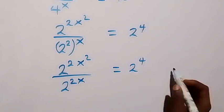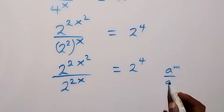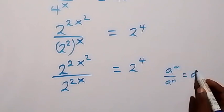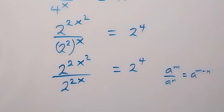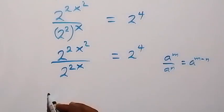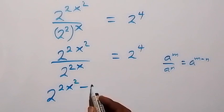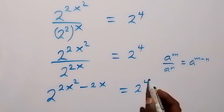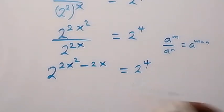Now applying the law of indices: a raised to power n over a raised to power n equals a raised to power n minus n. So this becomes 2 raised to power 2x squared minus 2x, equals 2 raised to power 4.